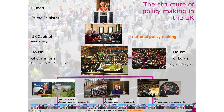So there you have it: the Queen, the Prime Minister, the UK Cabinet — also called the Executive — the House of Commons, where you have elected members of Parliament who have been elected by us, the general public, the citizens of the United Kingdom.